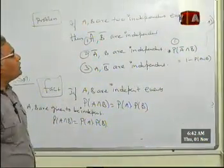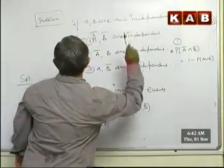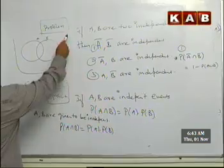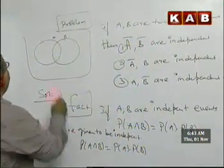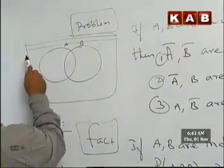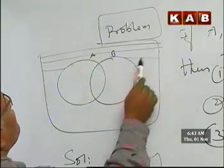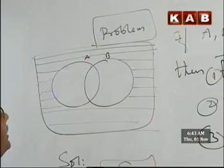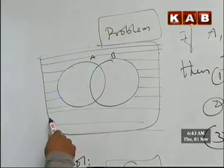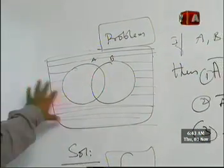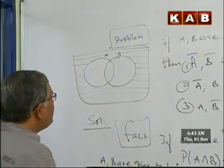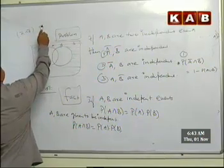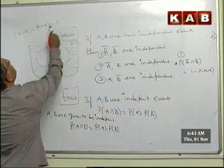Let me illustrate this with a Venn diagram. This is A, this is B, and this is the sample space. When you are talking about A̅ intersection B̅, this part will come — the region common to both A complement and B complement, shown by the horizontal shading. If you observe, A̅ intersection B̅ and A union B together give you the entire sample space.